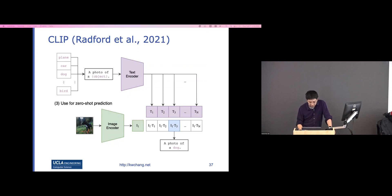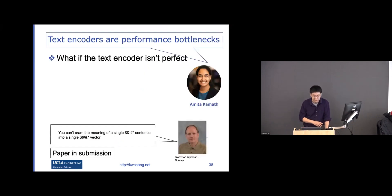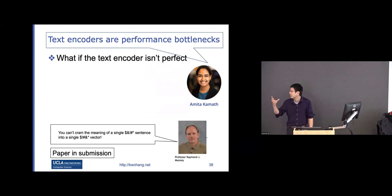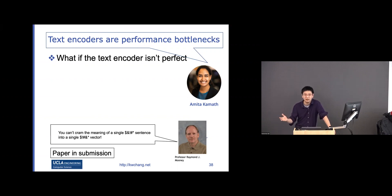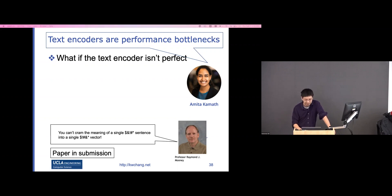CLIP achieves pretty good performance in identifying some real objects. But one restriction we find is that, as NLP practitioners know, if you encode a sentence into a single embedding, you lose a lot of information. People find those representations are very hard to use for things like distinguishing 'a dog chasing a cat' versus 'a cat chasing a dog.'